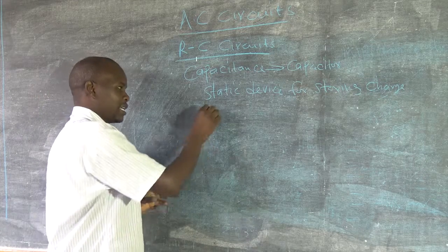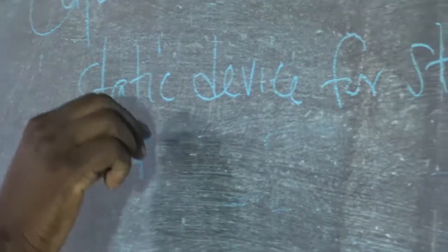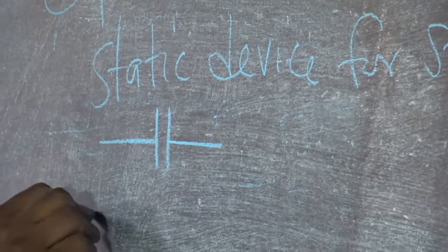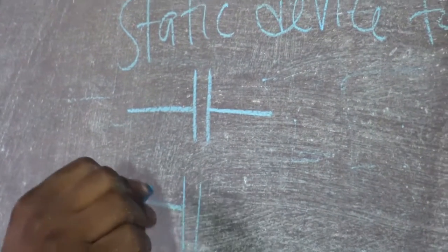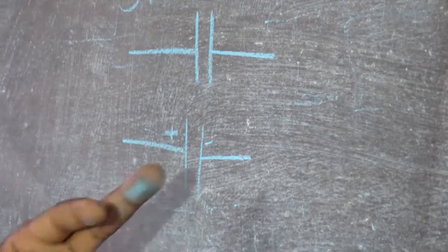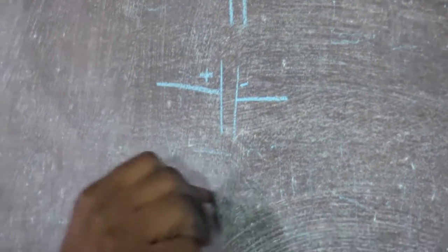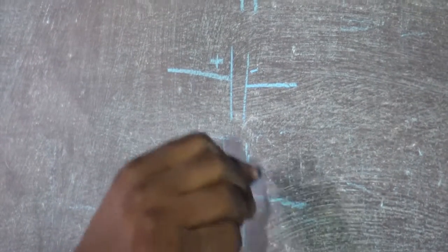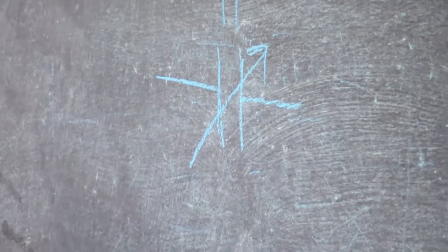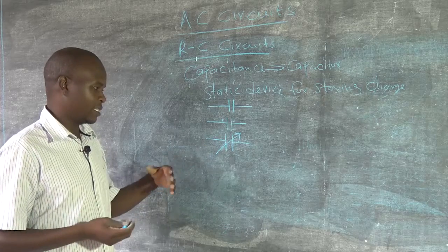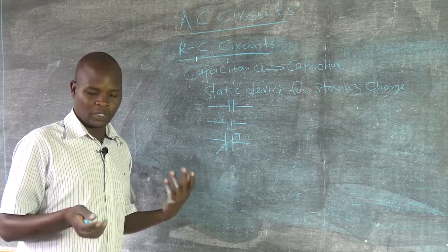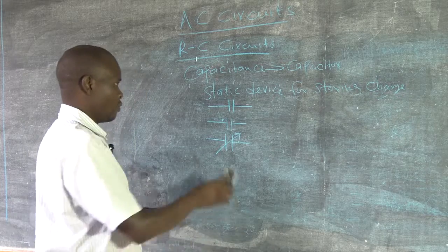And in an electric circuit we normally represent a capacitor by three symbols. Or you can represent a capacitor by this, positive minus, to show the positive rate and the negative rate. Or you can represent a capacitor by this. This means this is a variable capacitor. It is adjustable. You can adjust this to the value which you may want.